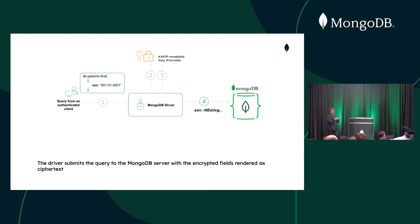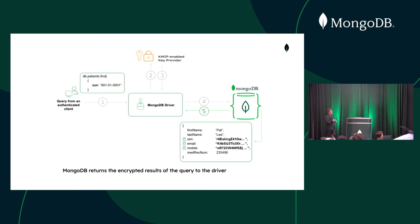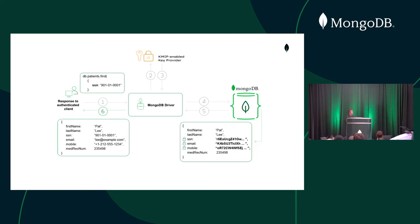The envelope key encrypts the sensitive fields and the data key, and the driver then sends that as ciphertext to MongoDB. Everything is done on the client side — the database never knows your data because we encrypt it before sending it. The database stores and returns ciphertext. The MongoDB driver then uses the data keys to decrypt the fields and return them to the client.